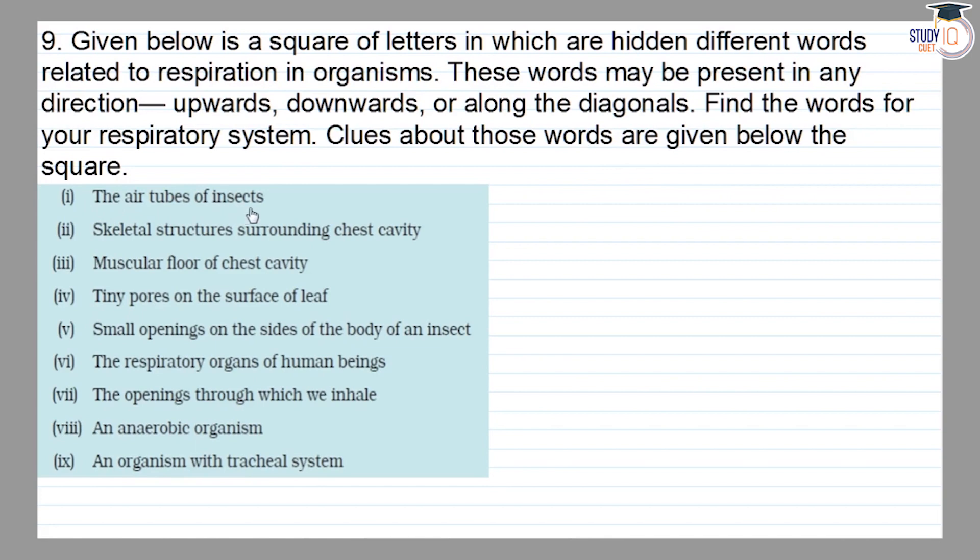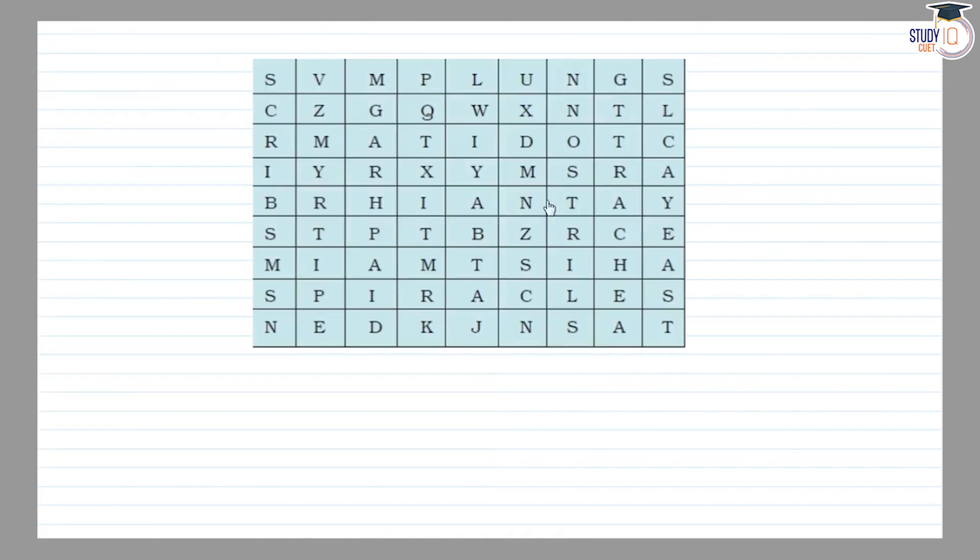First is the air tubes of insects. It is trachea. Let's take it. Where is trachea? This is trachea.